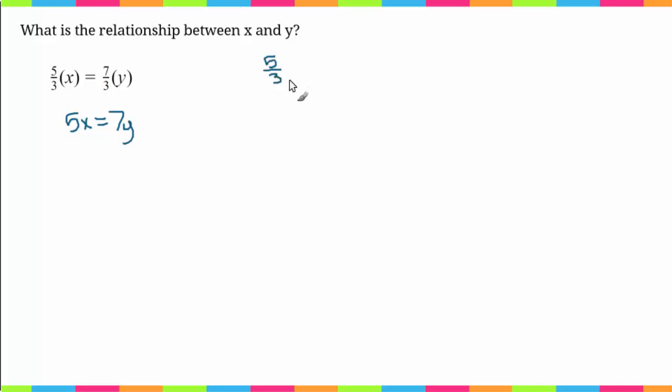But let me explain why we can do that. So 5 over 3 times x is the same as times x over 1, and then on this side we have a similar idea. So we have 7 over 3 times y over 1. Now if you remember, when multiplying fractions you multiply straight across, which means you multiply numerator by numerator and denominator by denominator. So on this left-hand side we're going to get 5x over 3 equals 7y over 3.